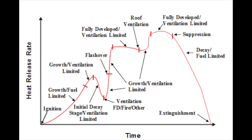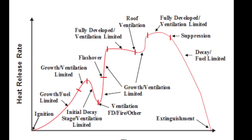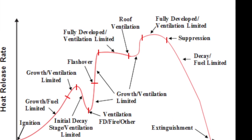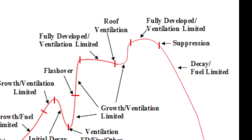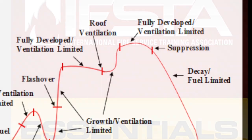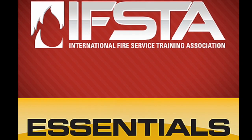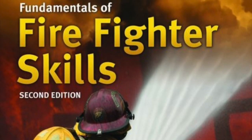Stages of fire development. This is a fire growth curve of opening the front door and letting the fire get fully developed, then putting a hole in the roof and letting the fire get fully developed again. There are several growth stages, several decay stages, and several fully developed stages. This is how it's being presented now — in the new versions of Essentials and other training books, it will look a little different than it has in the past.